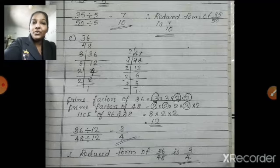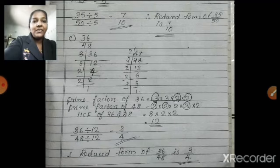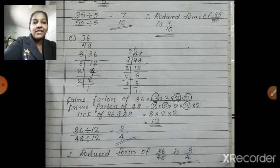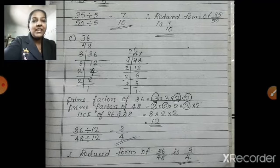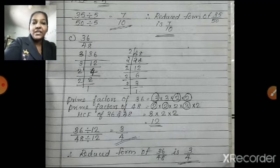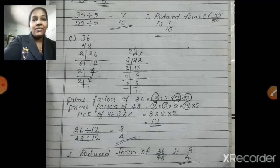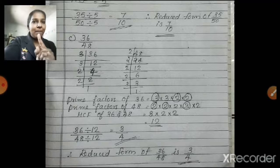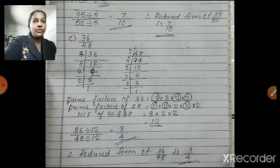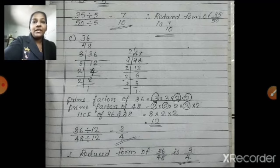Divide both numerator and denominator by 12 — that is 36 ÷ 12 and 48 ÷ 12. 36 ÷ 12 is 3, and 48 ÷ 12 is 4. So the fraction is 3 by 4. Therefore, the reduced form of 36 by 48 is 3 by 4. This is the way to reduce a given fraction using HCF. Always remember: first, take the HCF of the numerator and denominator, then divide both numerator and denominator by that HCF. The fraction you get after that process is the reduced form of the given fraction.